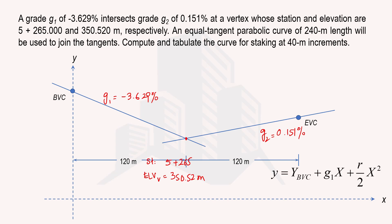Using the formula derived in previous videos for determination of elevation of different points on the vertical curve: y_bvc is the reduced level of the beginning point of the vertical curve; x is the distance from the BVC to the point where we want to find elevation; and r is the rate of change of gradient with respect to length. We need to find the elevation at exactly 40-meter increments along the 240-meter curve.